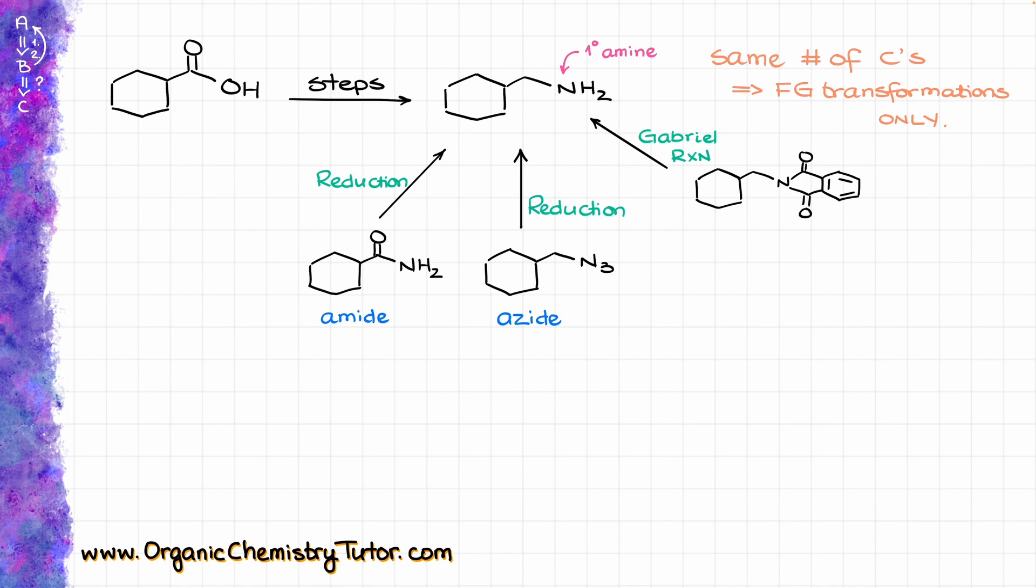And since we have a carboxylic acid as our starting material, probably the reduction of an amide, which is the carboxylic acid derivative, is the best method in this case. Which means that we now need to come up with a way how to make an amide from our carboxylic acid.